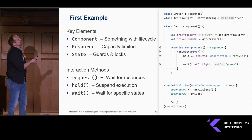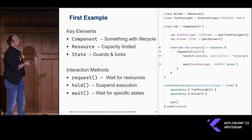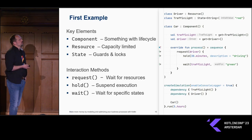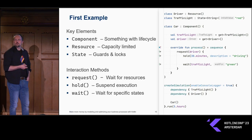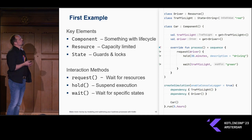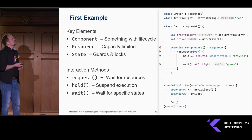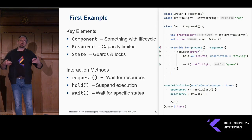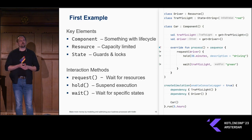Once we have declared our components, we can simply spin up the simulation: we have a dependency which is a traffic light, another dependency which is a driver with a default capacity of one, and then we define a single car. This is a simplistic example, but the idea is to introduce the main components. Besides the elements themselves, we also have interaction methods that allow us to bring the different entities of a simulation together.